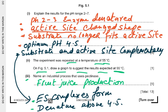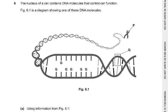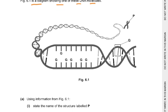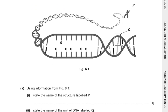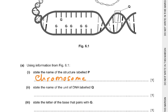Question 6: the nucleus of a cell contains DNA molecules that control cell function. Figure 6.1 shows one of these DNA molecules. The structure labelled P is a chromosome. The unit of DNA labelled Q is a nucleotide. The base that pairs with G is C — guanine pairs with cytosine.